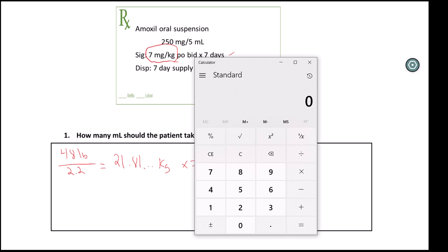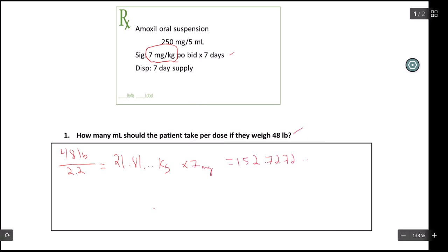Now, the question states, how many mLs should the patient take? So there's directions that have to go on the label of this product. The patient is not going to say take 152.72 mg by mouth twice a day for seven days. It's going to say the amount of liquid that the person is going to get. We know that the liquid concentration that we're dealing with here is that every 5 mLs of this antibiotic suspension contains 250 mg of the drug.